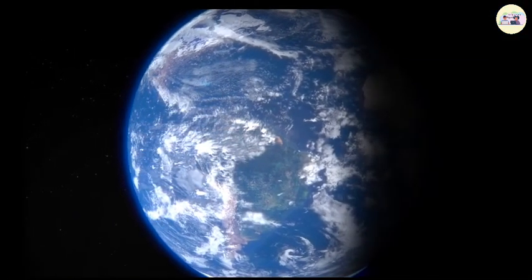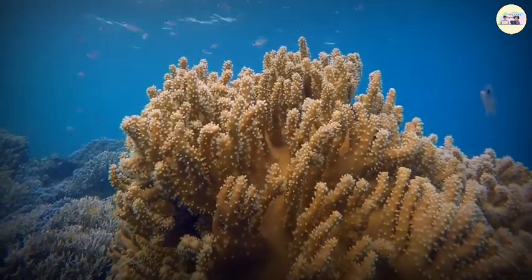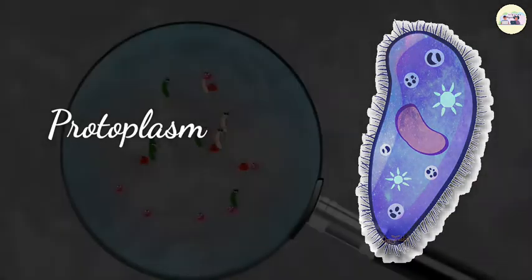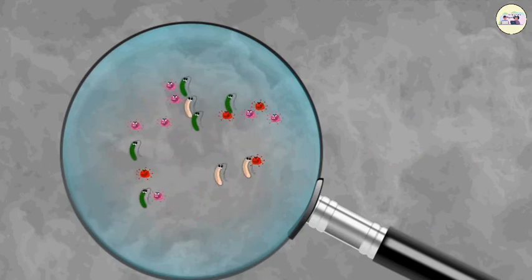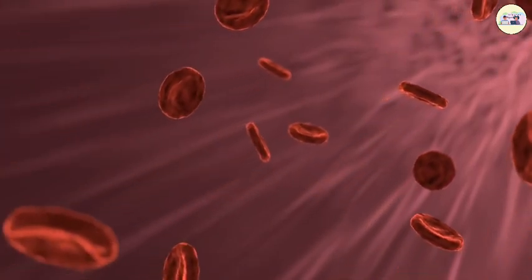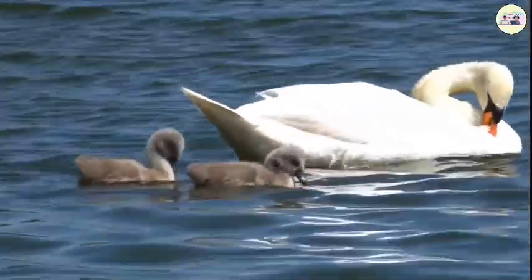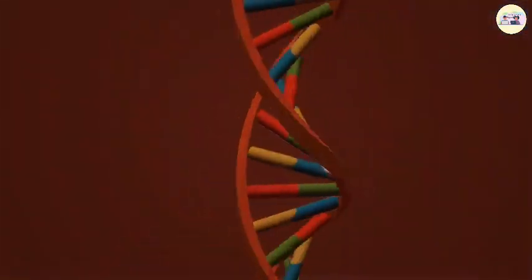3.5 billion years ago, life had been non-existent on the earth. At the beginning, there may have been only simple elements in the ocean, and simple types of organic and inorganic compounds may have been formed from those. The first living material, protoplasm, was formed in the ocean. The first primitive type of cell may have been formed from a mixture of different types of organic and inorganic compounds. Slowly, unicellular organisms were formed, and gradually changes occurred in them, from which larger and more complex organisms were formed.